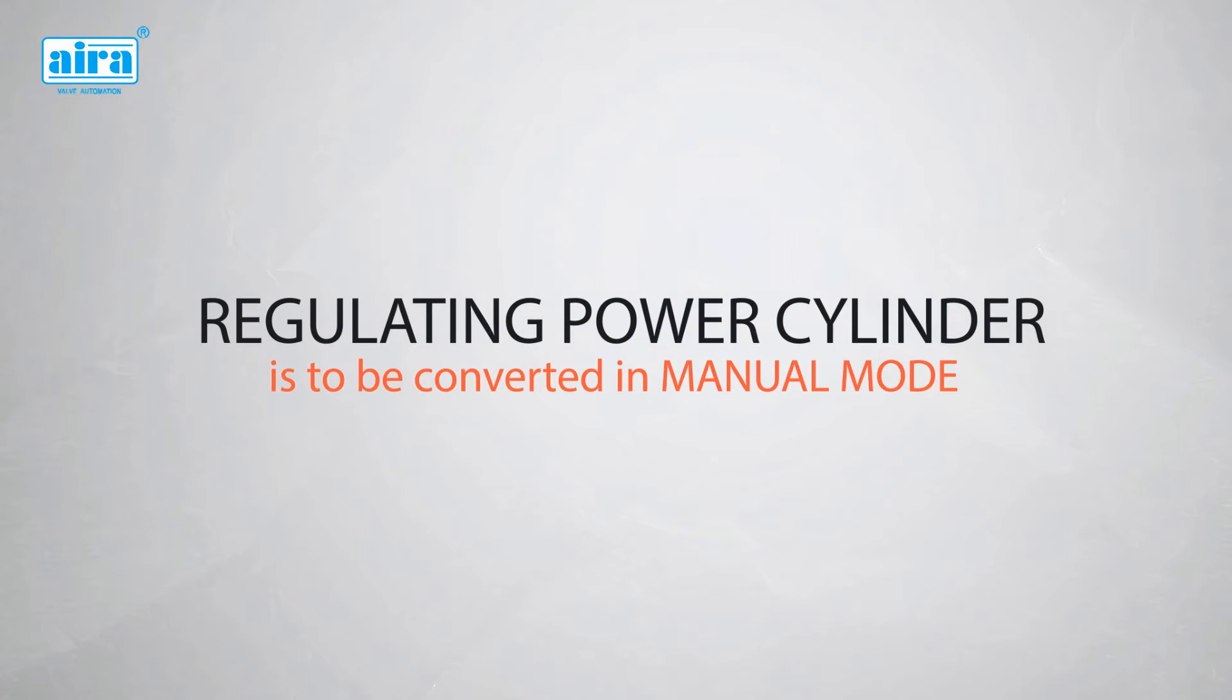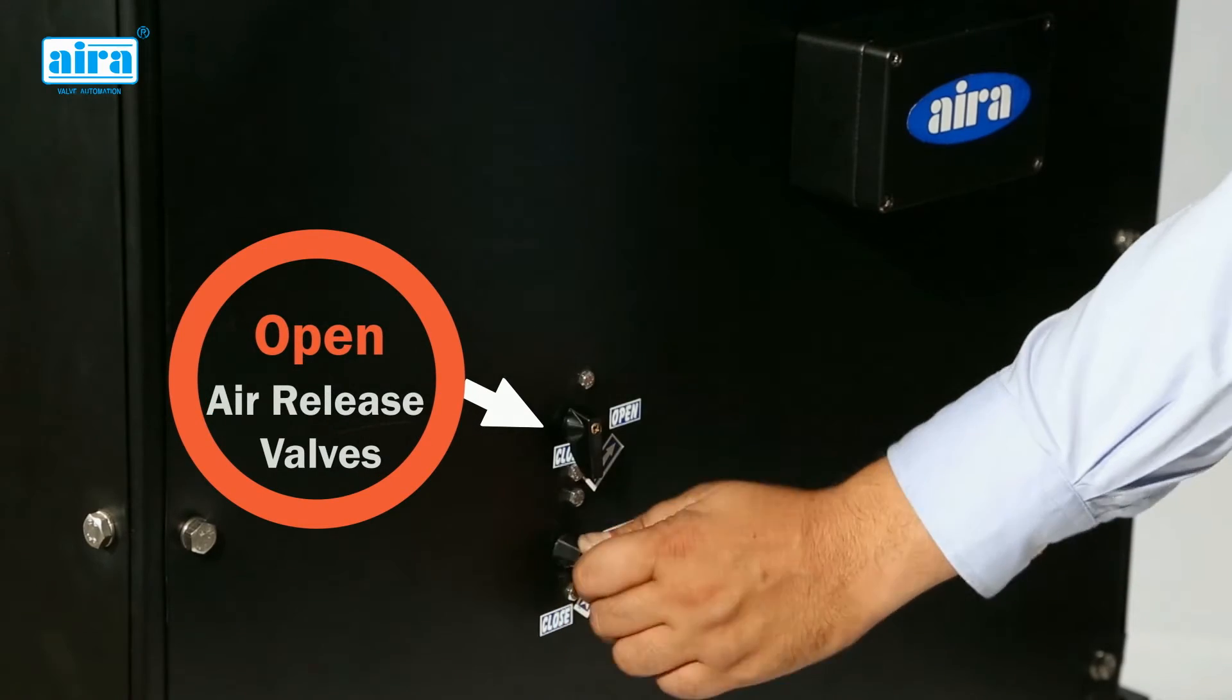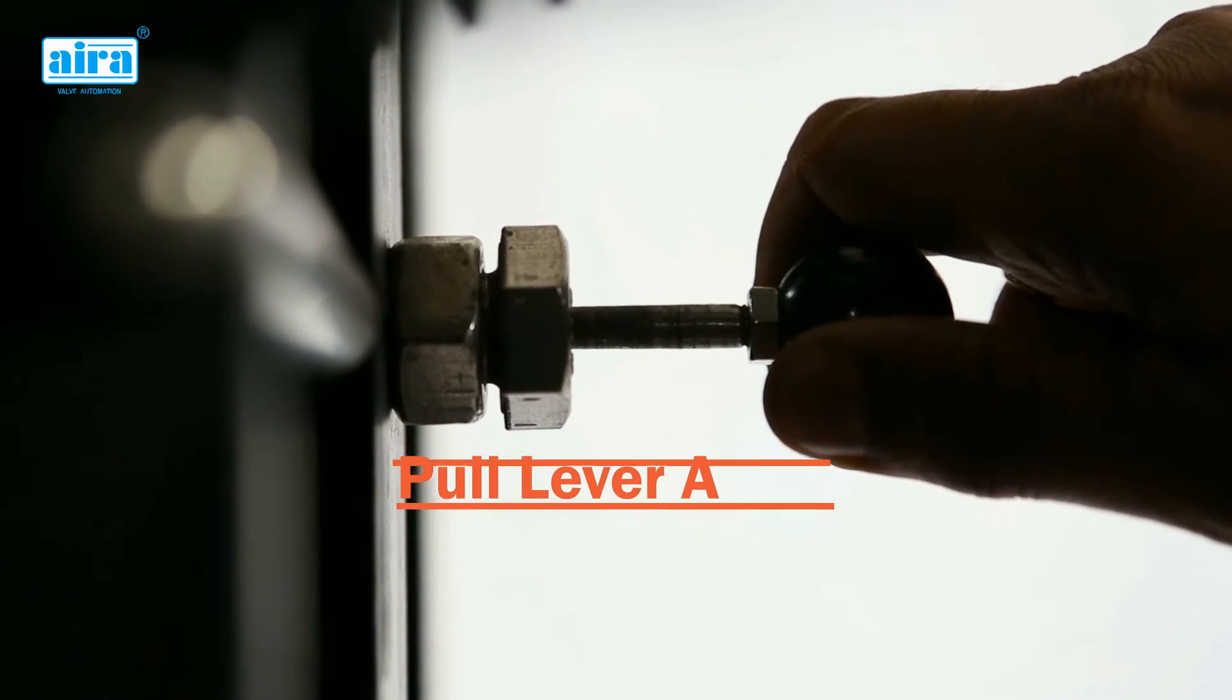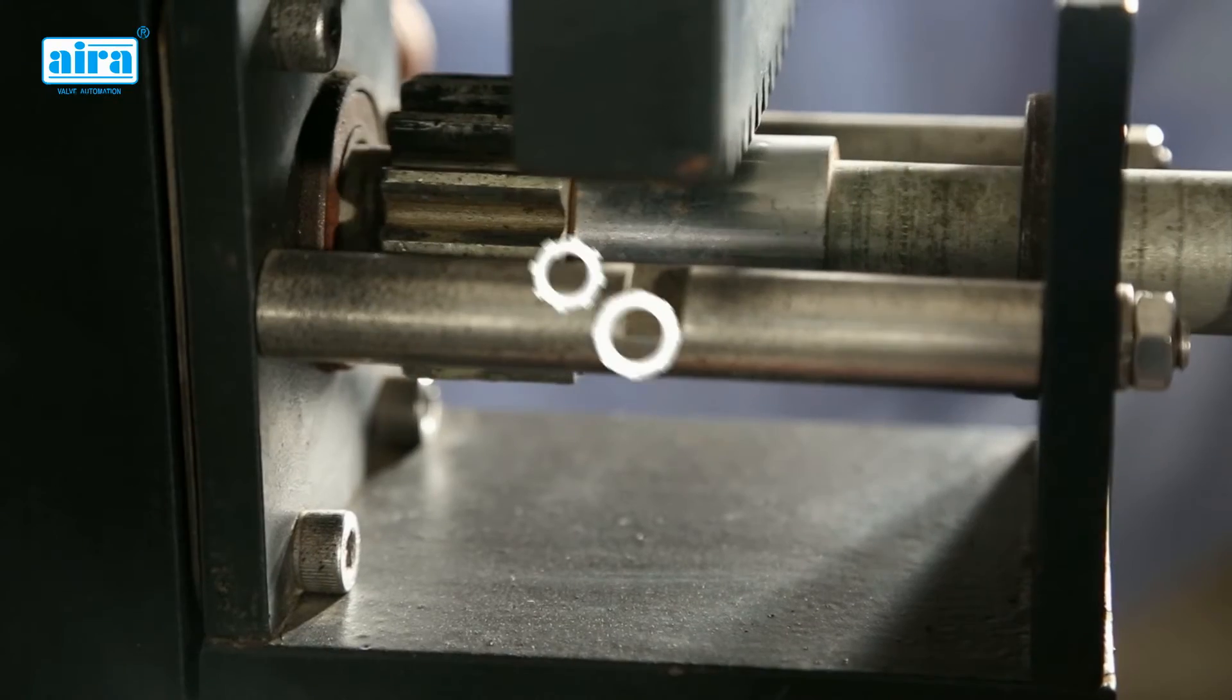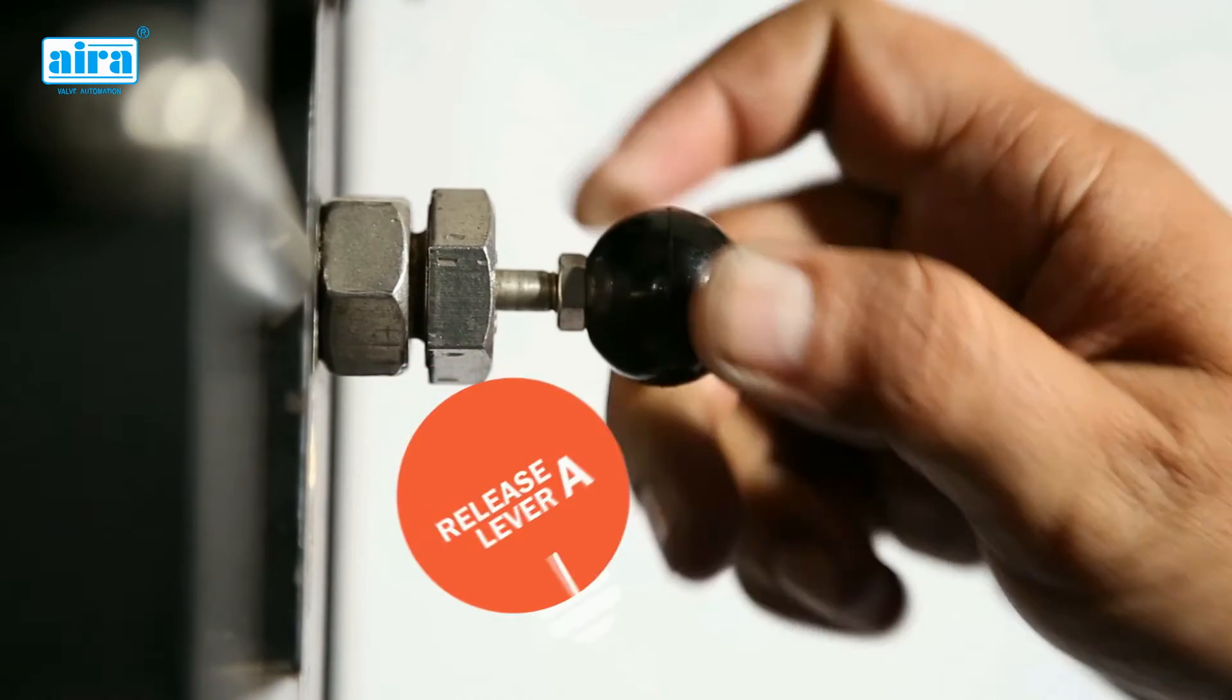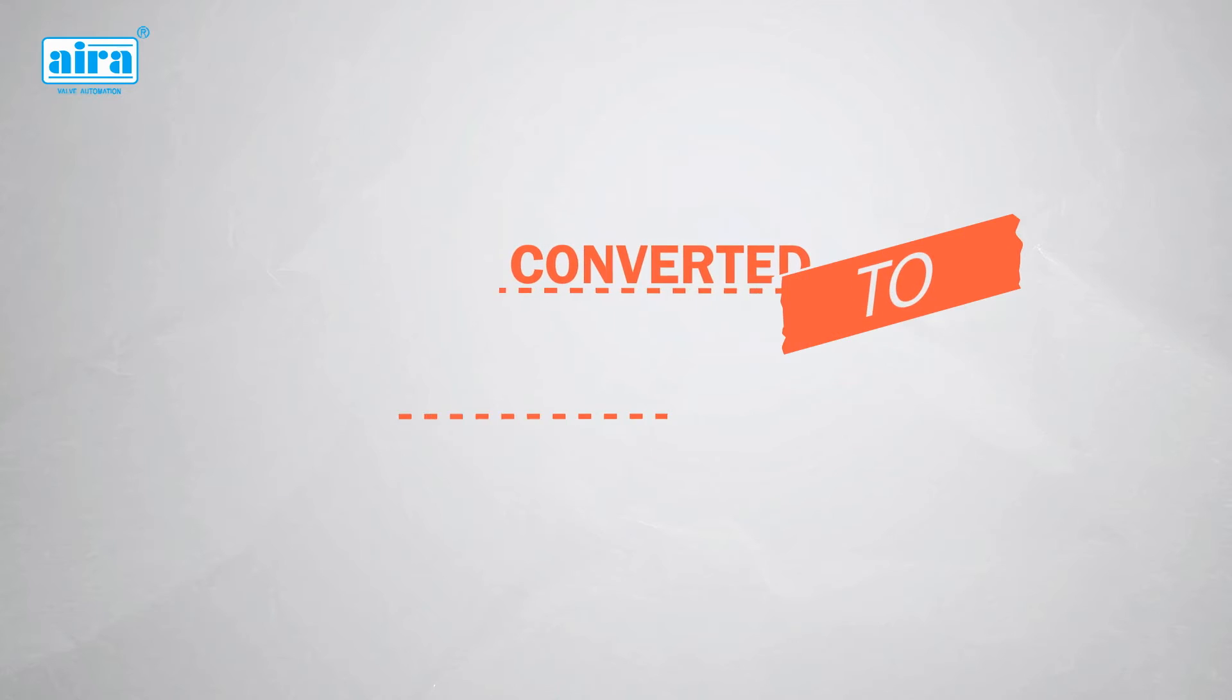If the RPC is to be converted to manual mode and then again to auto mode, both the air release valves need to be opened first. Then pull lever A and engage the clutch by pulling lever B with hand wheel and then release lever A. This is how it can be converted into manual mode and can be operated by lever B manually.